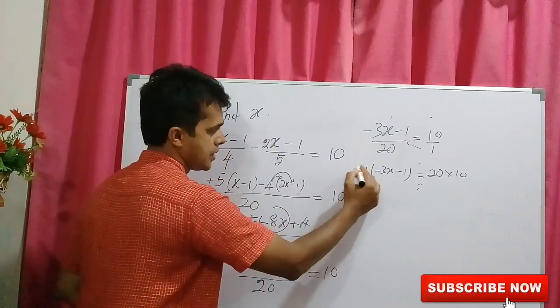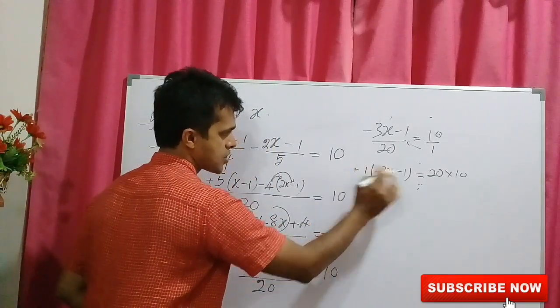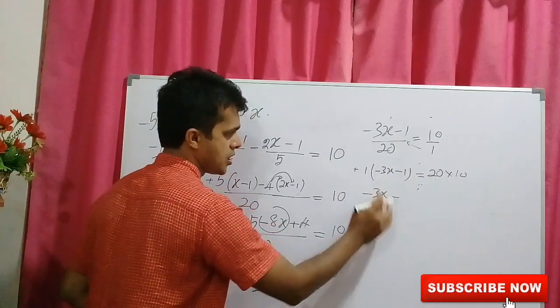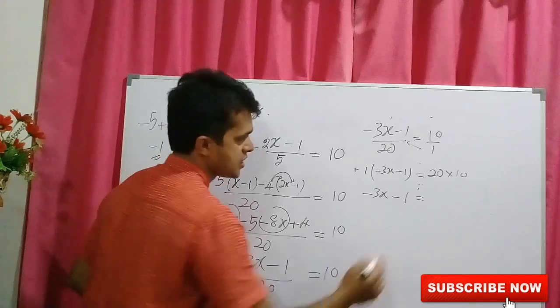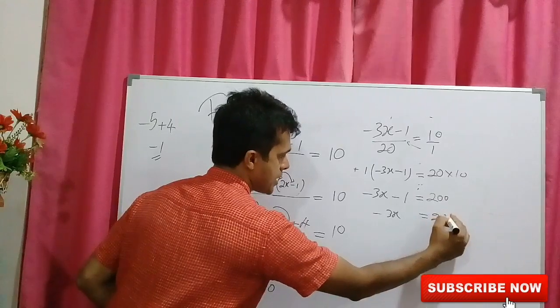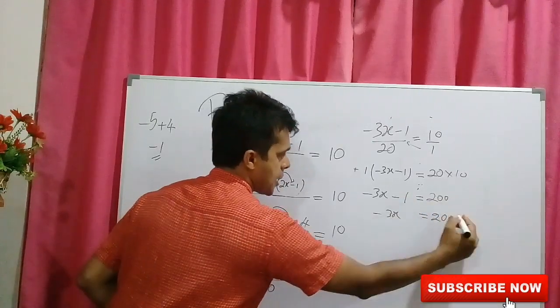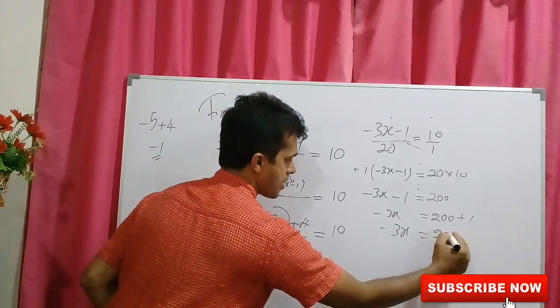What is the answer? Here plus, plus times minus is minus. 1 times 1 is 1. 20 times 10 is 200. Now, negative 3x equals to 100. Negative 1 becomes positive 1. Negative 3x equals to 201.